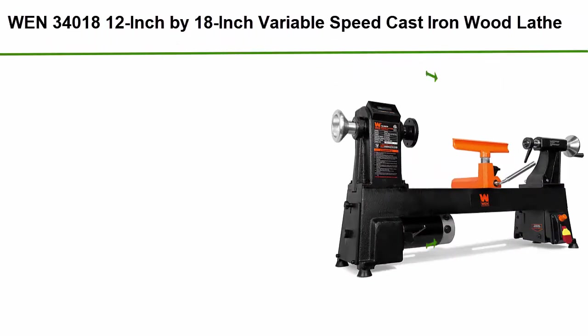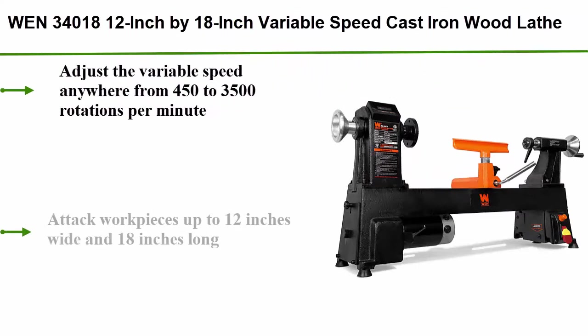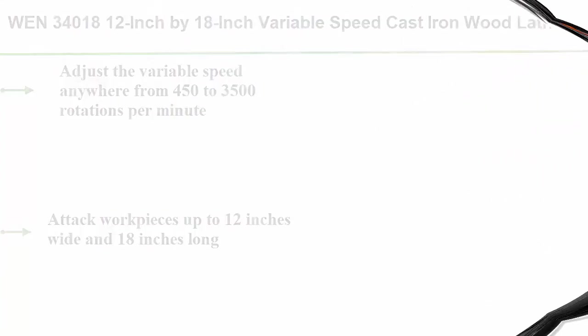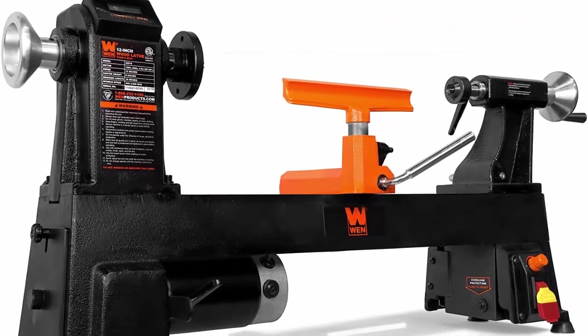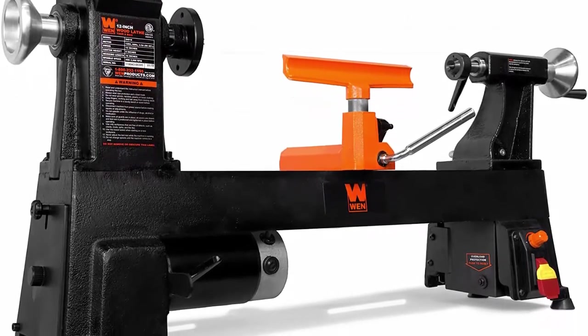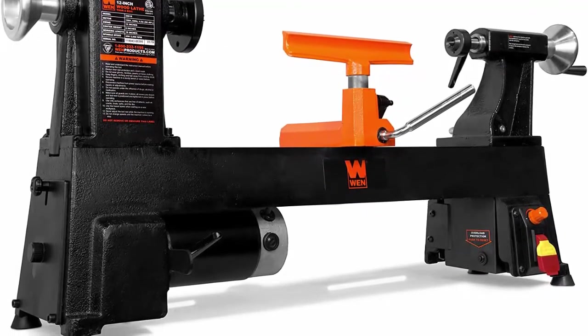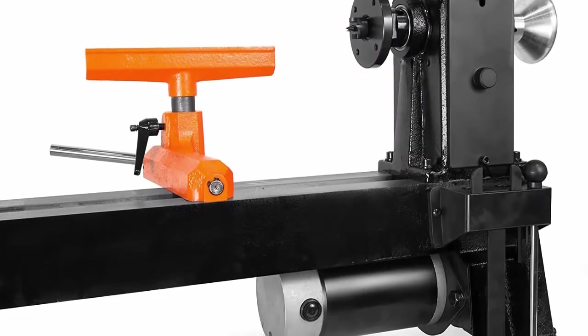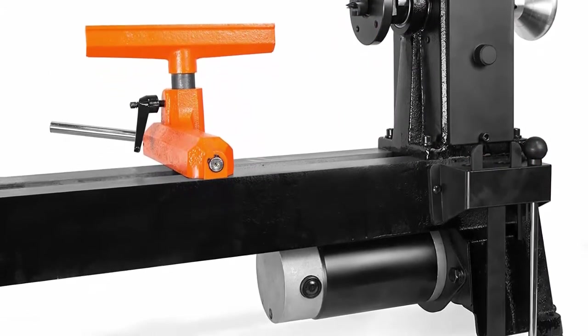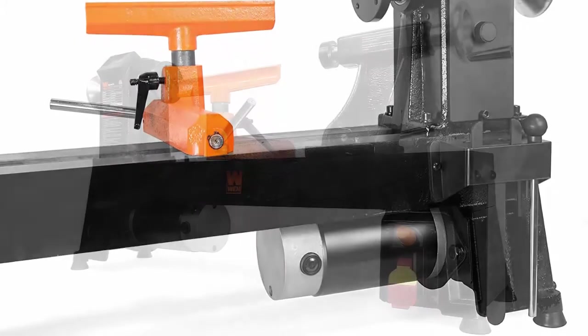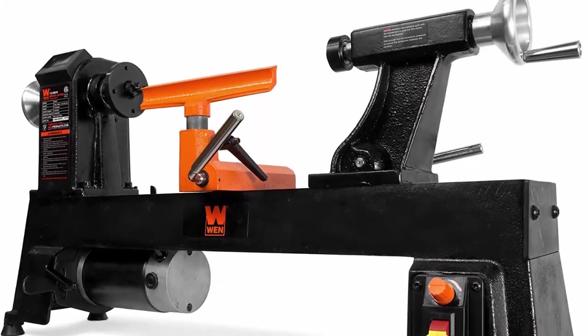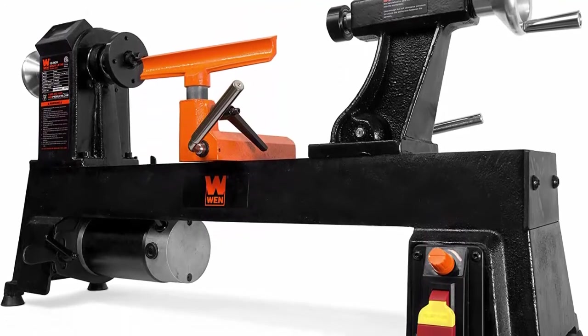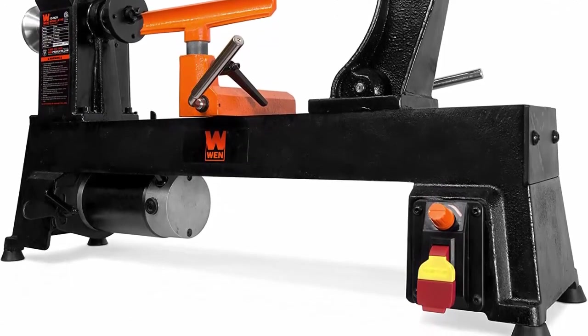WEN 34018, 12 inch by 18 inch variable speed cast iron wood lathe. Adjust the variable speed anywhere from 450 to 3500 rotations per minute. Attack workpieces up to 12 inches wide and 18 inches long. Soft startups prevent damage to both your workpiece and the 4.5 amp motor. Includes a digital speed display, an 8 inch tool rest, a face plate, a live center, a spur center, and a two-year warranty. Increase the capacity to 12x41 inches with the WEN 3424EX table extension sold separately.